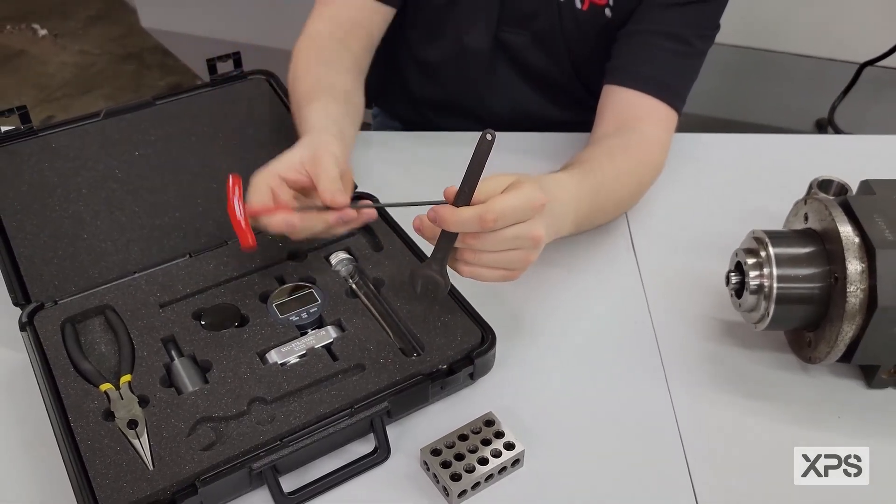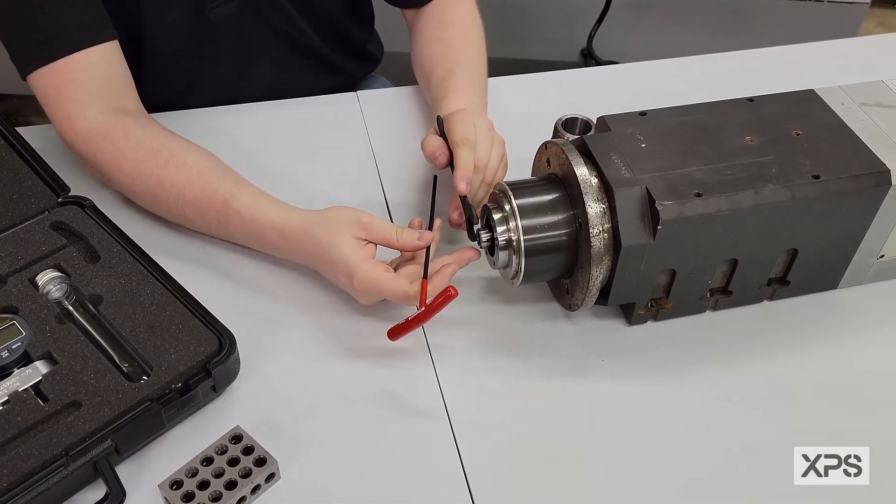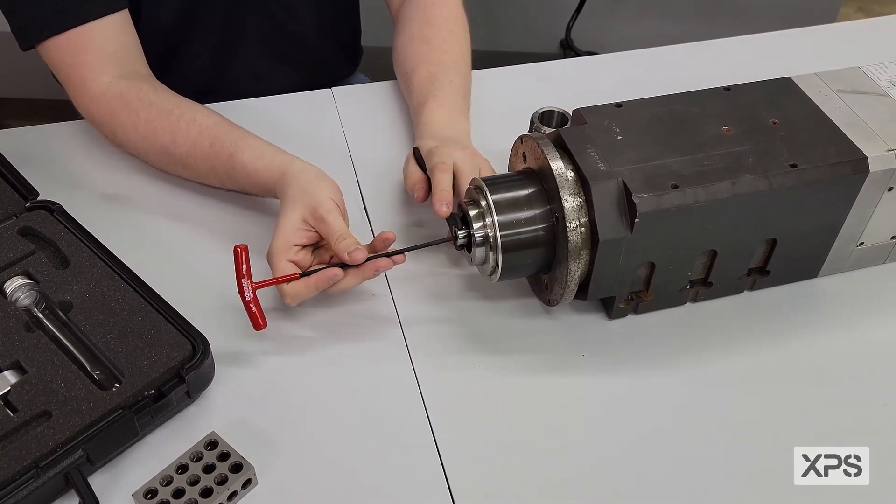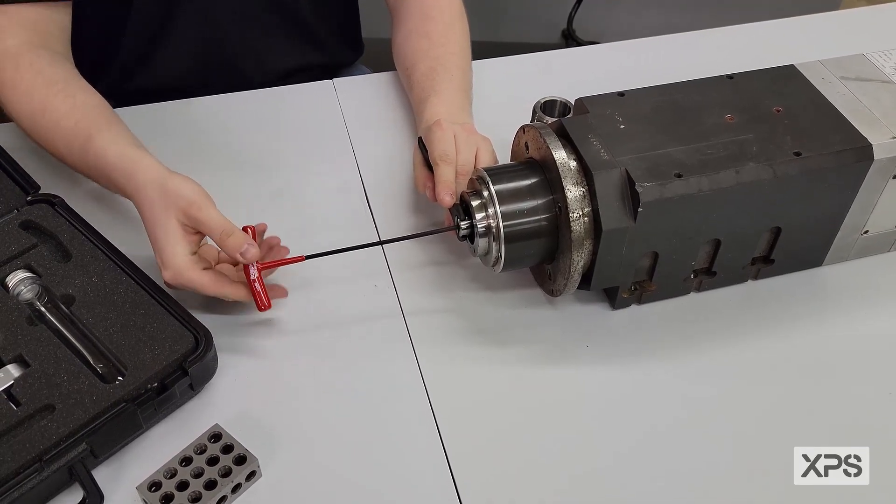Also, there is an included 4 millimeter allen. Line up the 18 millimeter wrench onto the flats of the spool. Insert your 4 millimeter allen wrench into the center of the spool. Turn it counterclockwise to loosen the spool.